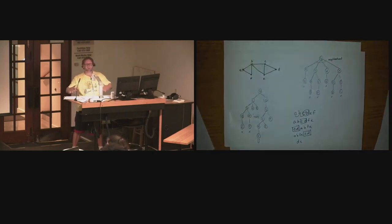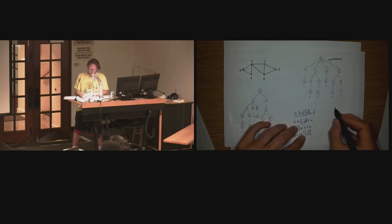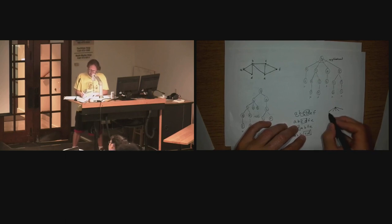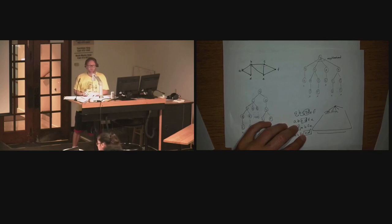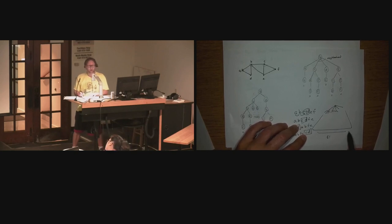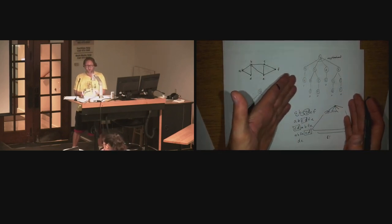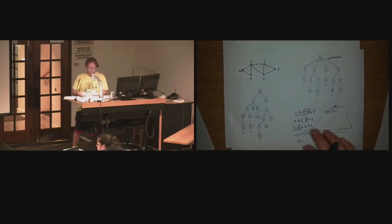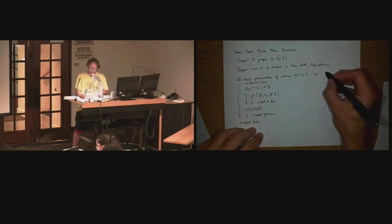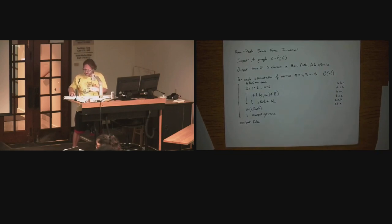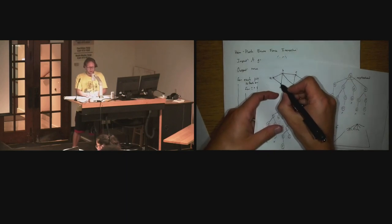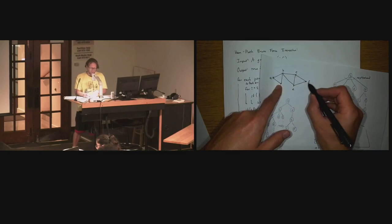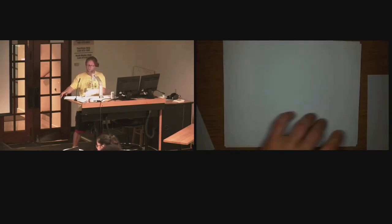Instead of generating every single permutation — which is O(n!) — let's use the topology of the graph to inform our decisions. If we ever get to vertex D, we will never go over to C, E, or F since they're not adjacent. So let's consider backtracking algorithmically. We'll call this ham_walk of G and P. The input is a graph G = (V, E), undirected, and a partial path P: V1, V2, ... VK — only K vertices in the path so far.